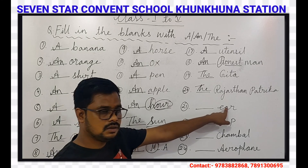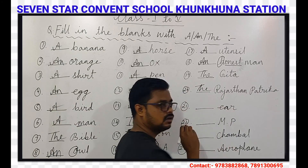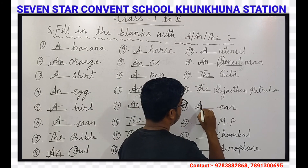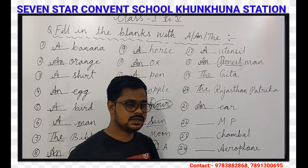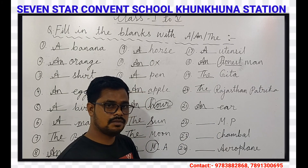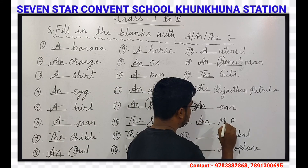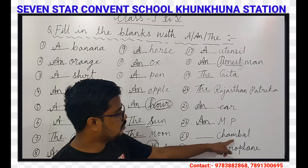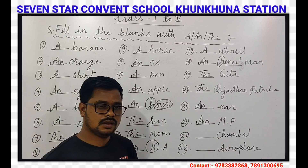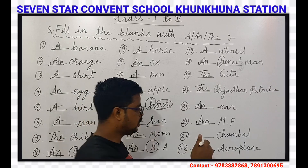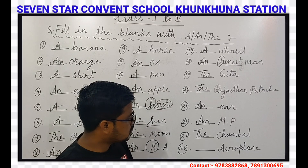Our next question is Year. The first letter of Year is E, and E is a vowel, so AN will come here. Our next question is MP — it is also an abbreviation. When we pronounce M, a vowel sound is coming, so AN will come here. And MP — that is Chambal. Chambal is the name of a river, and it is unique, so THE will come here.